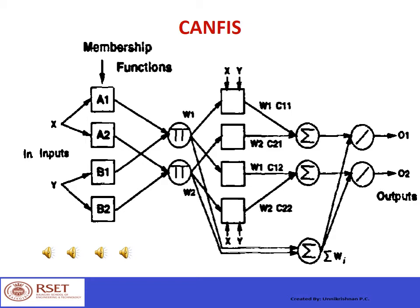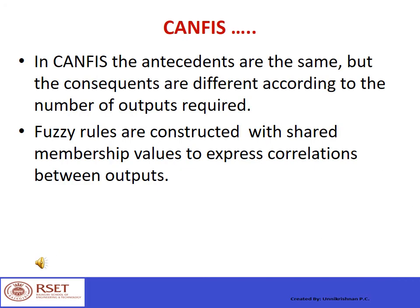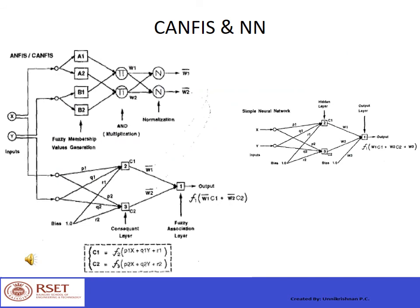Fuzzy rules are constructed with shared membership values to express correlations between outputs. So CANFIS is simply multiple ANFIS combined to obtain multiple outputs, and this can also be constructed by a simple neural network. So whatever CANFIS can do can be constructed by a simple neural network, and the standard learning algorithms can be used for learning this neural network.